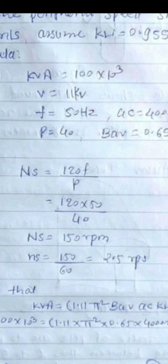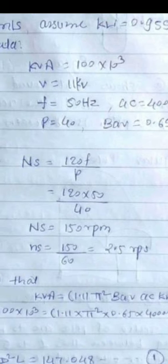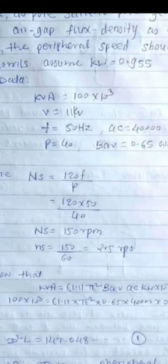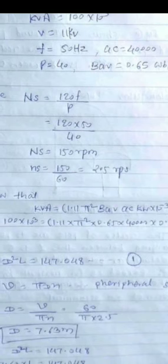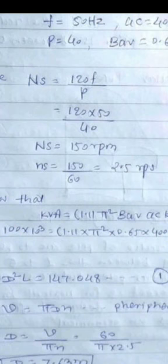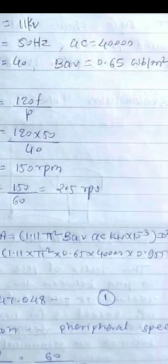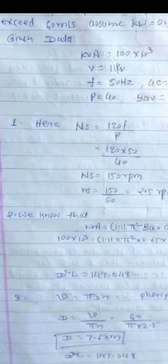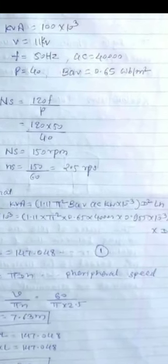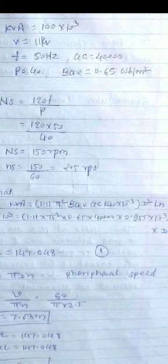NS equals 120 times 50 divided by 40, which equals 150 RPM. We have to convert this to RPS by dividing by 60. So NS equals 150 divided by 60, which equals 2.5 RPS.